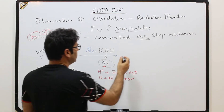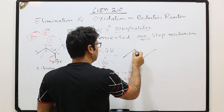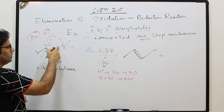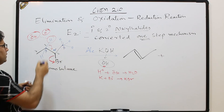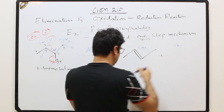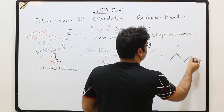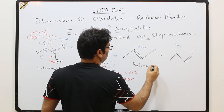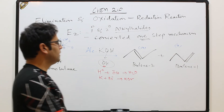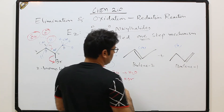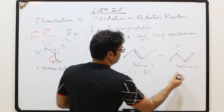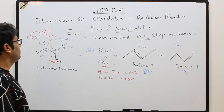There is the possibility of two products. If the double bond forms between the middle carbons it gives but-2-ene (product A); if the double bond forms at the terminal position it gives but-1-ene (product B). As per Zaitsev's rule, but-2-ene is the major product and but-1-ene is the minor product — reported as approximately 81% and 19% respectively.